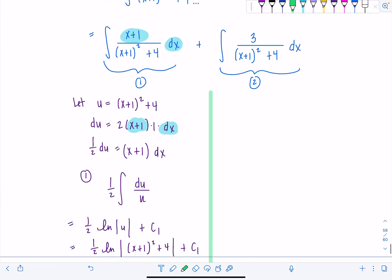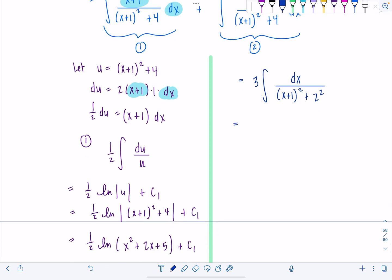This is going to be even easier. No u sub necessary. You should recognize this is good friend tan inverse. So let me take the 3 out. So you can see maybe this is dx over x plus 1 squared plus 2 squared. Does that help you a little bit? That 2 is looking weird. Okay.